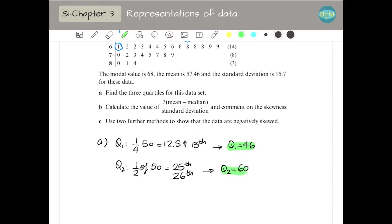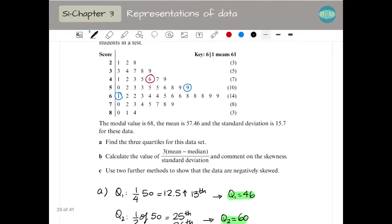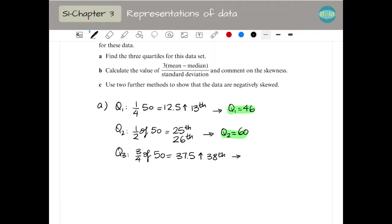And Q3 is 3 quarters of 50, which is 37.5. So I'm going to round up and I'm going to check the 38th value, which is 69. So this is my Q3. Q3 is 69.